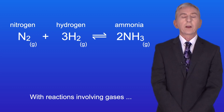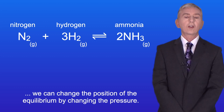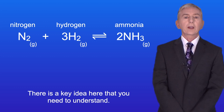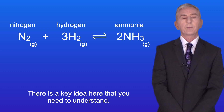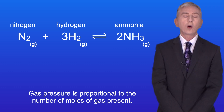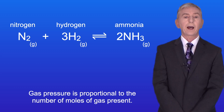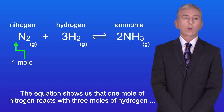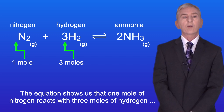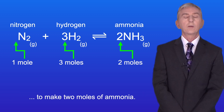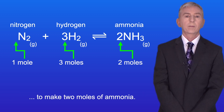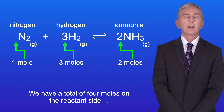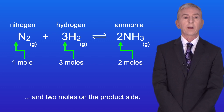With reactions involving gases we can change the position of the equilibrium by changing the pressure. There's a key idea here that you need to understand: gas pressure is proportional to the number of moles of gas present. The equation shows us that one mole of nitrogen reacts with three moles of hydrogen to make two moles of ammonia. We have a total of four moles on the reactant side and two moles on the product side.